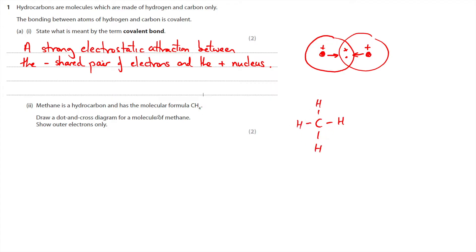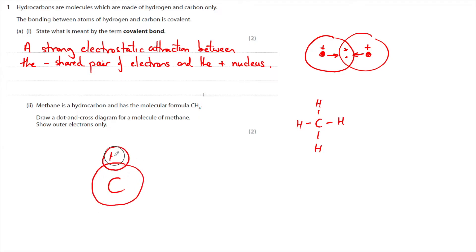Before drawing the molecule of methane, sketch that out first. We've got carbon in the middle and then four hydrogens around it. Hydrogen only has one electron so it's shared it, so nothing is on the outer part of the shell, and carbon has four electrons and it's shared all four — so that is the finished diagram.